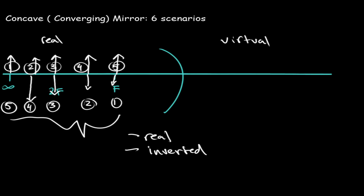This is a great trick to memorize five of the six scenarios for a concave converging mirror. Our images will be real and inverted, and they will either be reduced or magnified. This depends on the location of the object — as the object gets closer to the mirror, the image will get increasingly magnified.